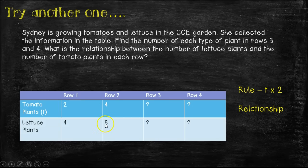So here, four times two gets us eight. So what do you think row three would be? We know that we added two each time up here. So four plus two would be six. Then we would know the relationship is T times two. So six times two would be 12.